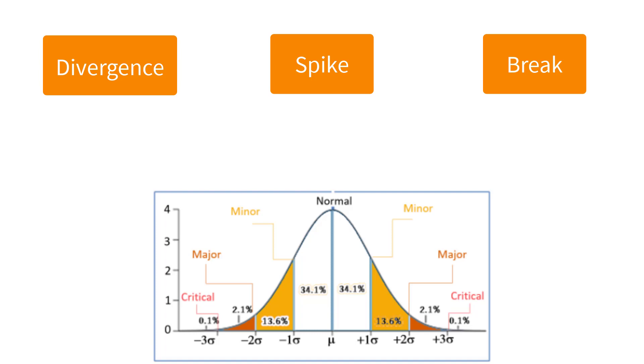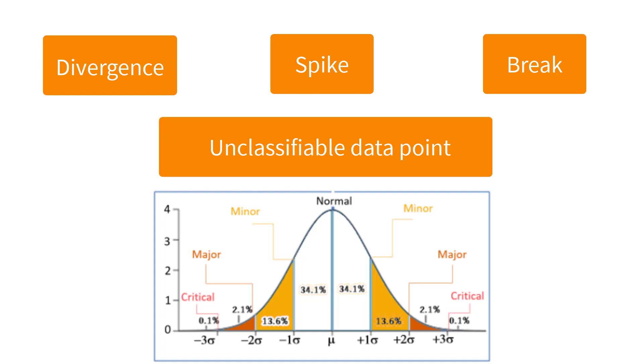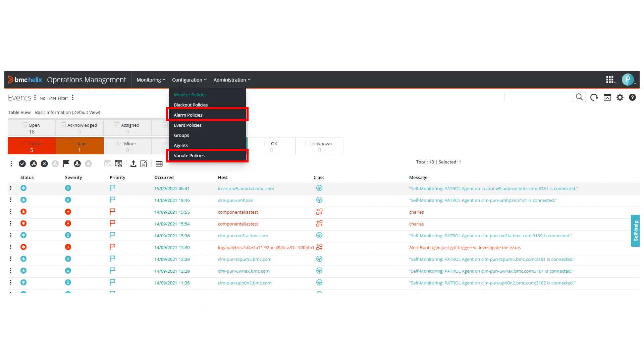A break in the periodicity, or an unclassifiable data point within a specific dataset. Use alarm and variate policies to detect anomalies in your system.